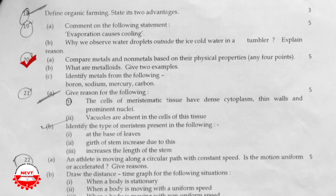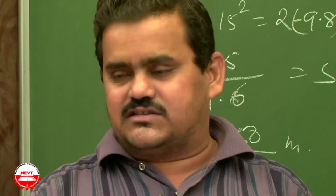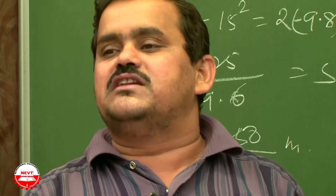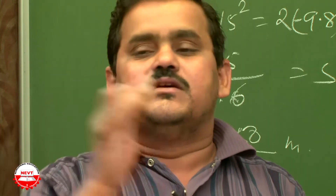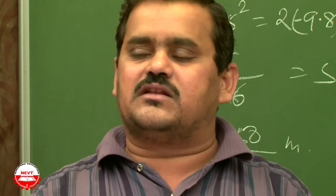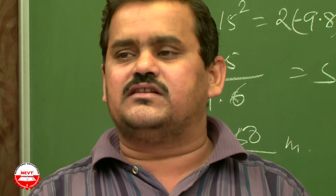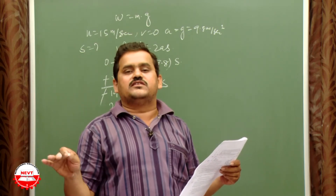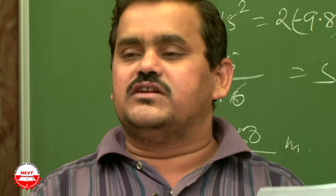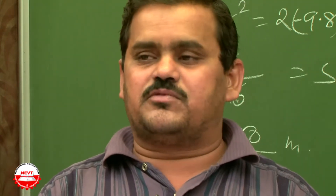Question 20: compare metals and non-metals based on four physical properties. Metals are lustrous; non-metals are not lustrous. Metals are malleable and ductile; non-metals are brittle. Metals are good conductors of heat and electricity; non-metals are poor conductors. Metals lose electrons to form positive ions; non-metals gain electrons to form negative ions.